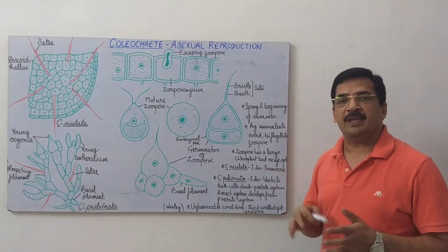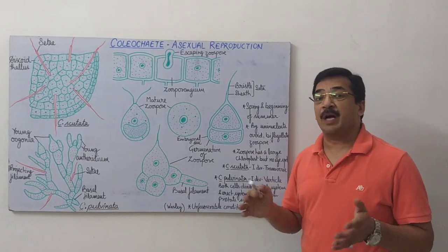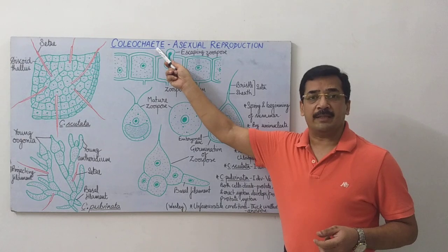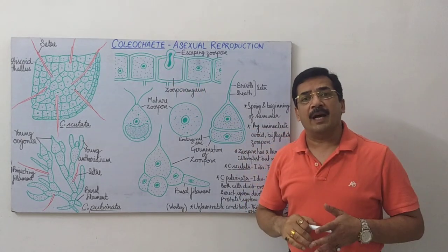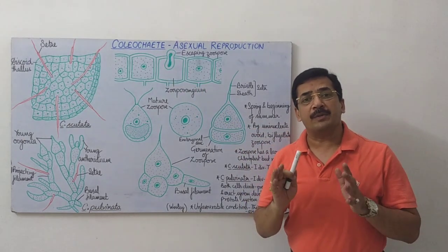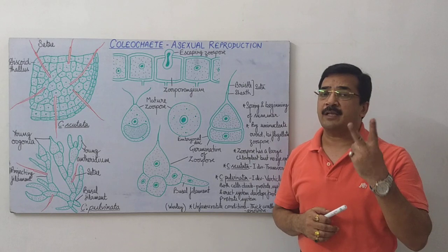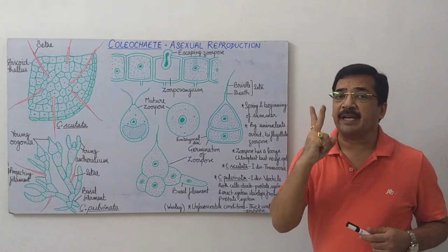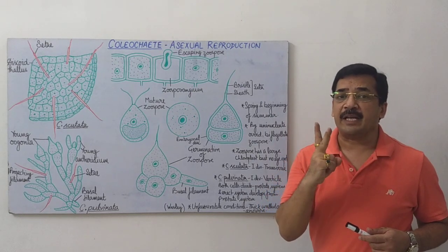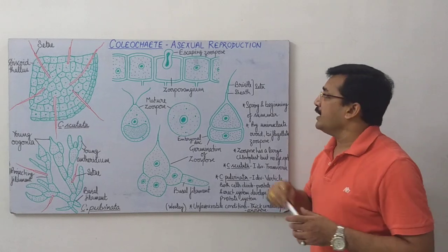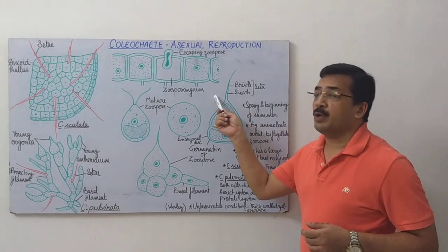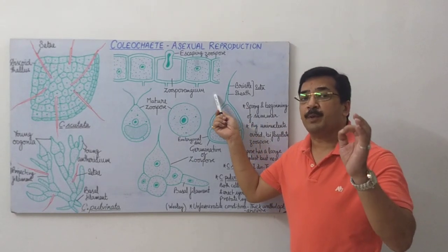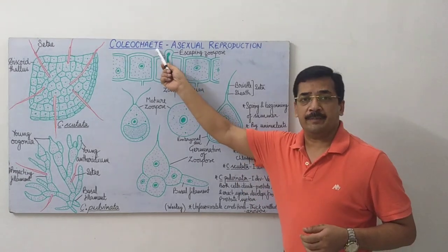In this video, we will discuss the reproduction process in Coleochaete. This alga reproduces by two methods: one is asexual and the second is sexual. Now I am going to discuss the asexual reproduction process in Coleochaete.